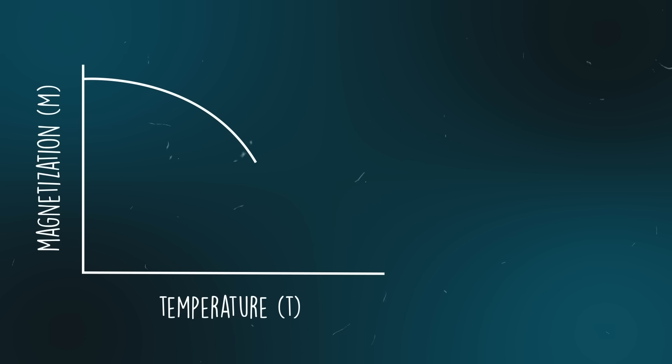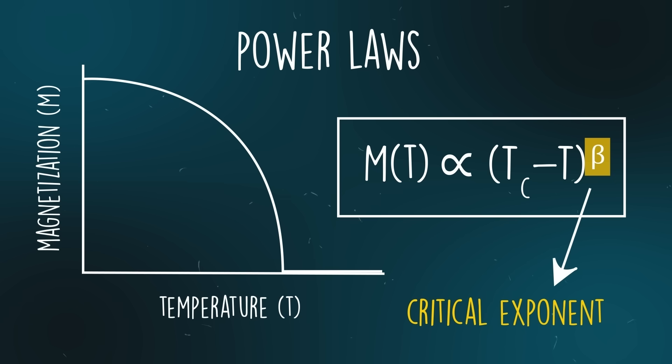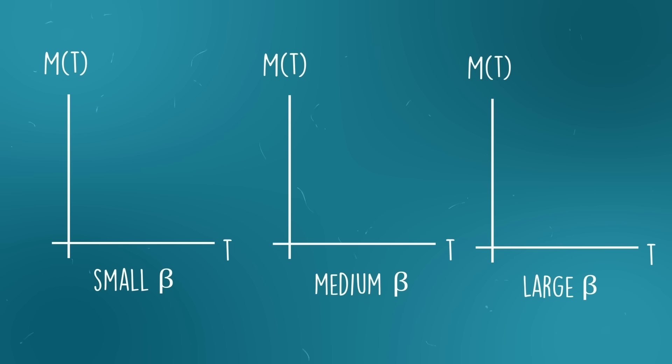And here's where things get even weirder. For magnets, physicists have found that around the critical temperature, magnetization as a function of temperature obeys this relationship. These kinds of relationships are called power laws, and the power beta is called a critical exponent. Physically, the critical exponent represents how abrupt the transition is. If beta were smaller, the magnetization would drop off more abruptly as you approach the critical temperature. And if beta were larger, the magnetization would drop off less quickly. Essentially, the power law tells you that a phase transition happens in the first place, and the critical exponent tells you how abruptly the transition happens.